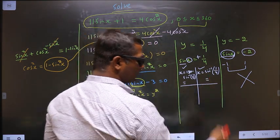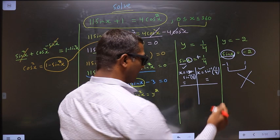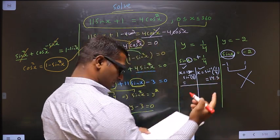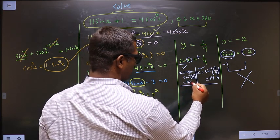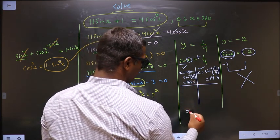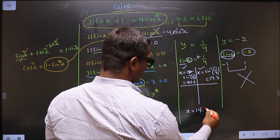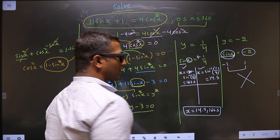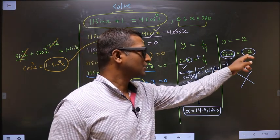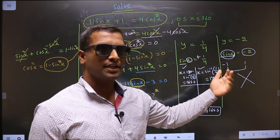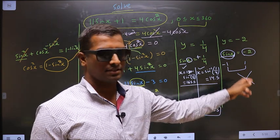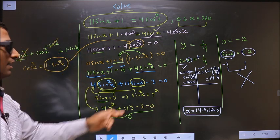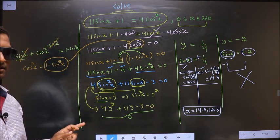Put this in the calculator, you should get 14.5. Put this in the calculator, you should get 165.5. So values for x are 14.5 and 165.5. Sin x should lie between minus 1 and plus 1. If it does not lie, you neglect this. So this is our answer.